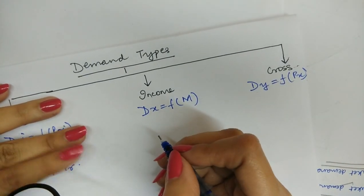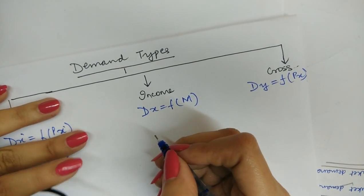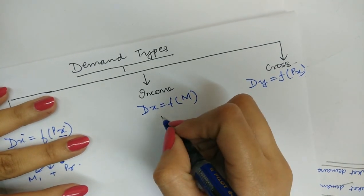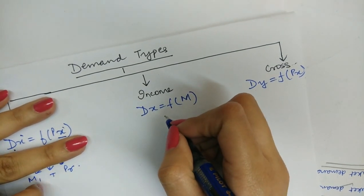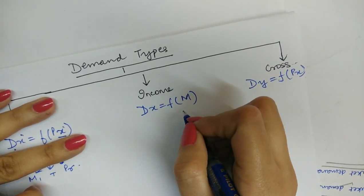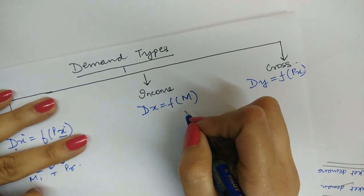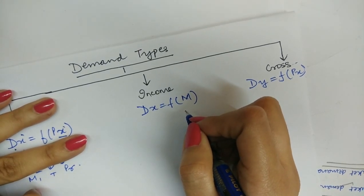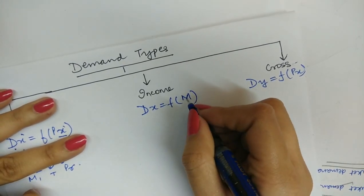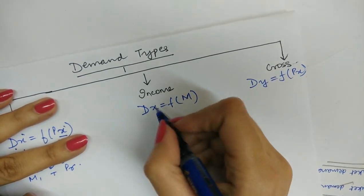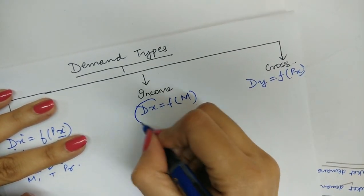Income demand refers to the quantity demanded of a commodity in relation to the income of the consumer. Other things being equal, it shows the relationship between the consumer's income and the demand for the commodity.